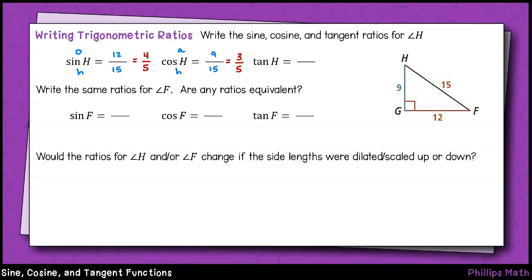For tangent of angle H, that will be the opposite side divided by the adjacent side. For this triangle, that will be 12 over 9. Take a moment to try the same exercise for the acute angle F.